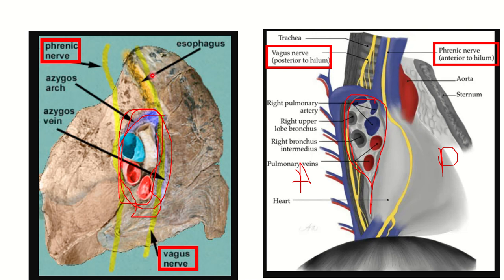So anteriorly there is the phrenic nerve and posteriorly there is the vagus nerve. These two nerves are very important for any type of exam — that the phrenic nerve passes anterior to the hilum or root of the lung, and the vagus nerve passes posterior to the hilum or root of the lung.